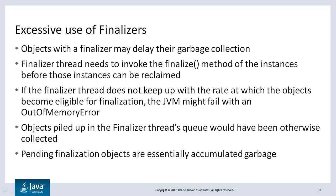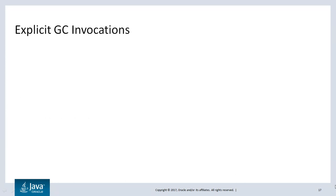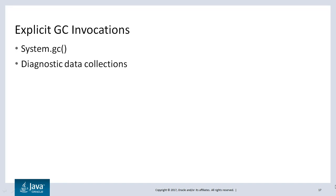One important point to note is that finalizers are being deprecated in Java 9. Explicit GC invocations such as System.gc(), or diagnostic data collections like collection of heap dumps invoking full GCs, can cause long pauses in Java applications.